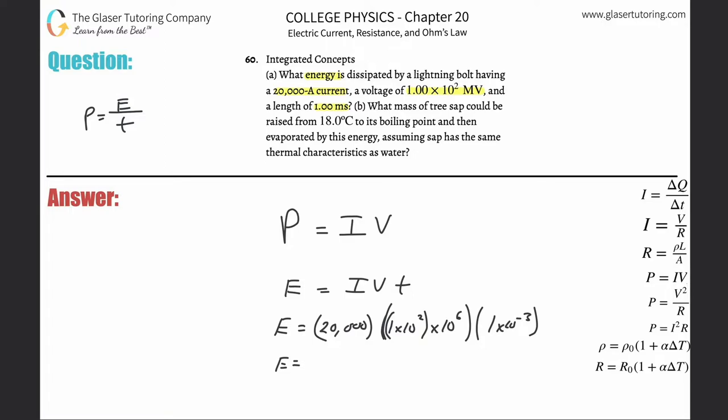Enough of the lecture. So 20,000 times 1 times 10 to the 2, multiplied by 10 raised to the sixth, and then take that and multiply it by 1 times 10 to the minus 3. This is 2 times 10 to the fourth, so this would be 4, 6, 12, minus 3 should be 9. And that's in joules.